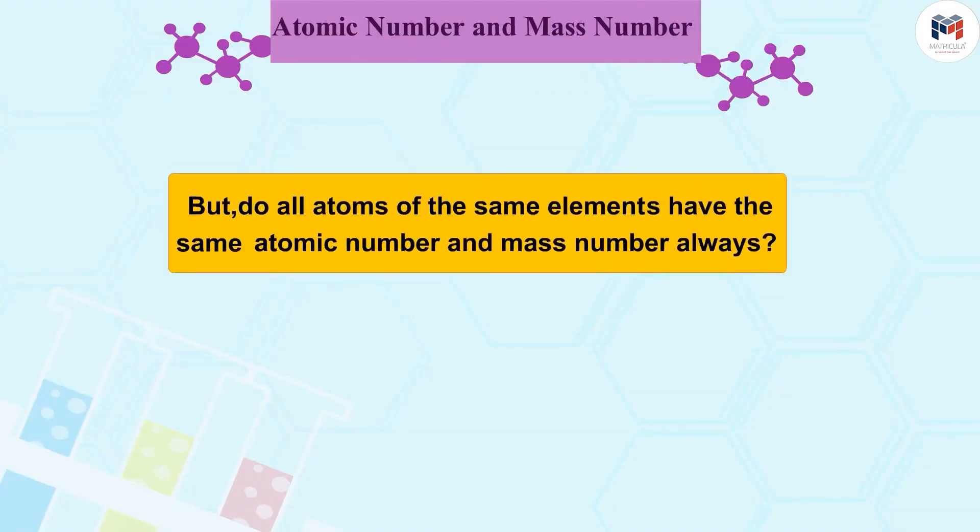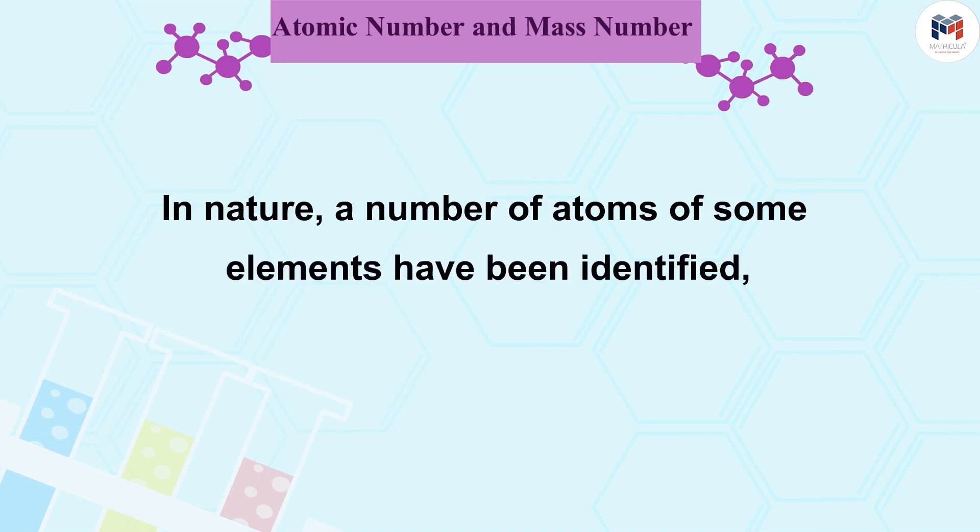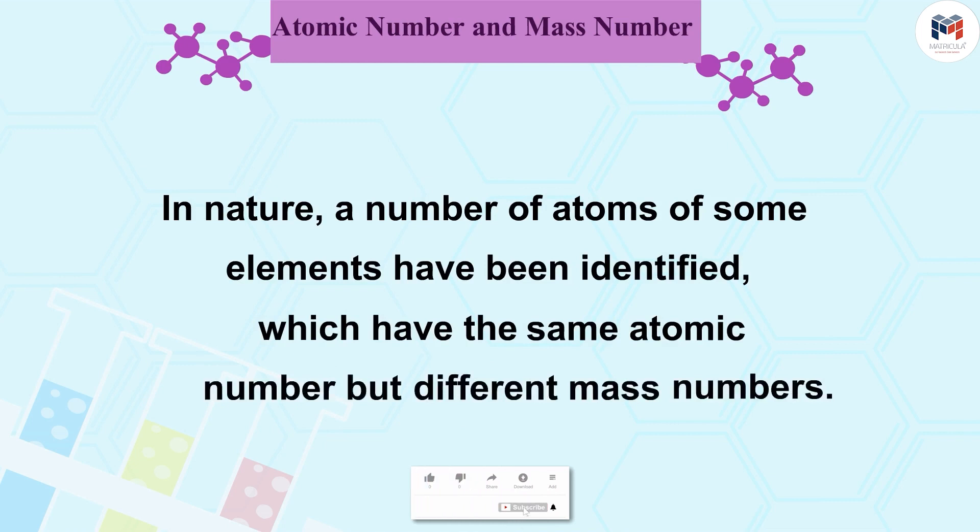But do all atoms of the same elements have the same atomic number and mass number always? No. In nature, a number of atoms of some elements have been identified which have the same atomic number but different mass numbers.